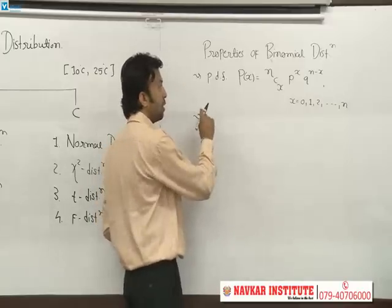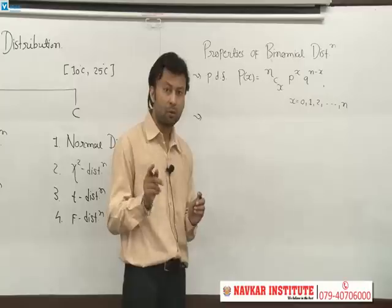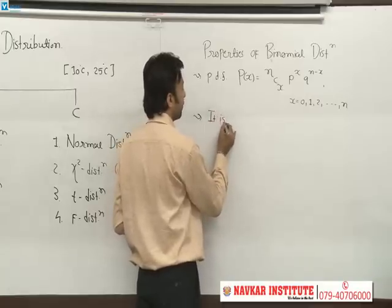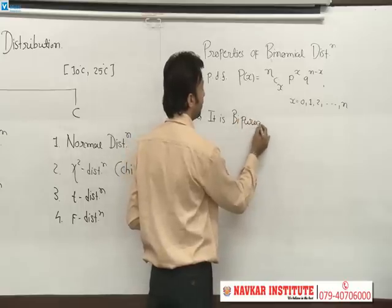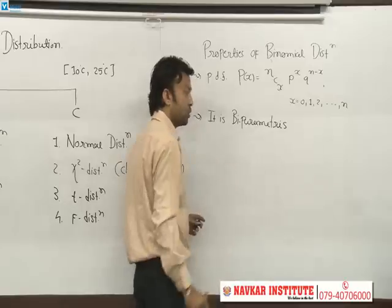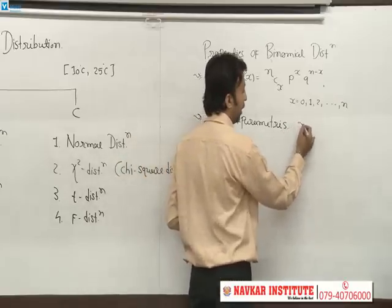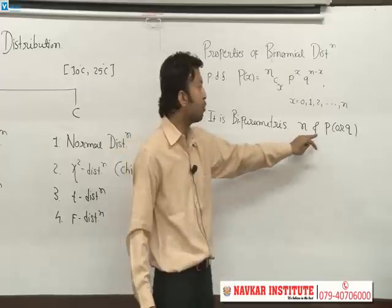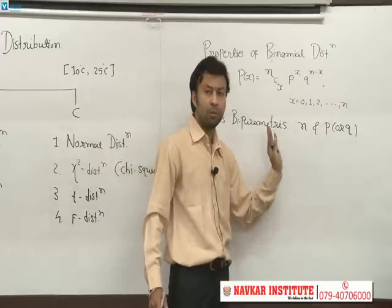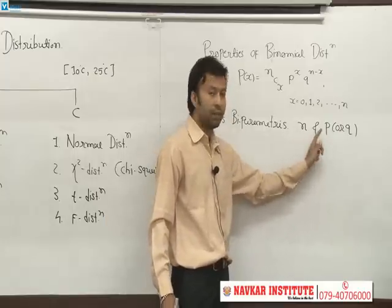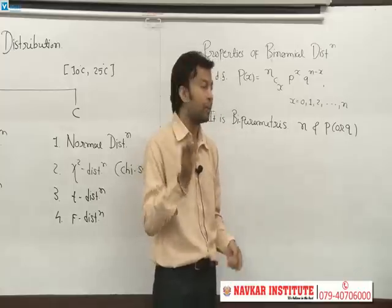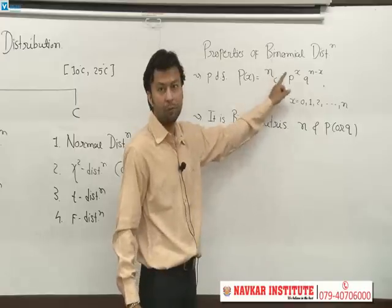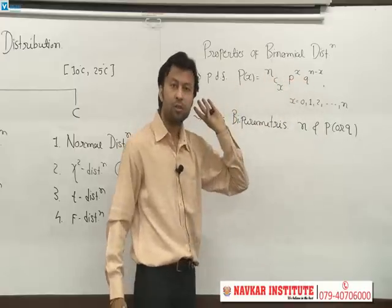The second property is that binomial distribution is biparametric — there are two parameters: N and P. If you know P, then Q can be derived. If we know the values of N and P, we can find out the probability of any event, since X represents the number of successes we want to find.